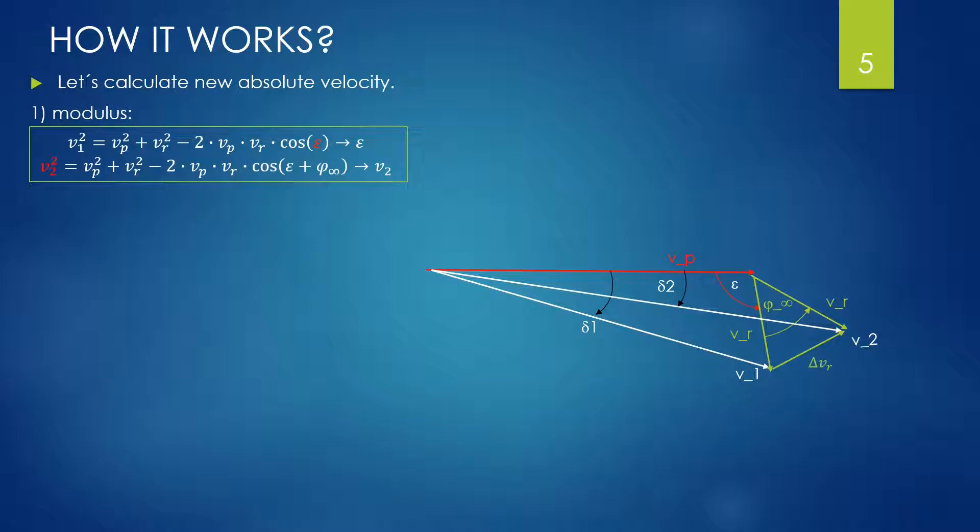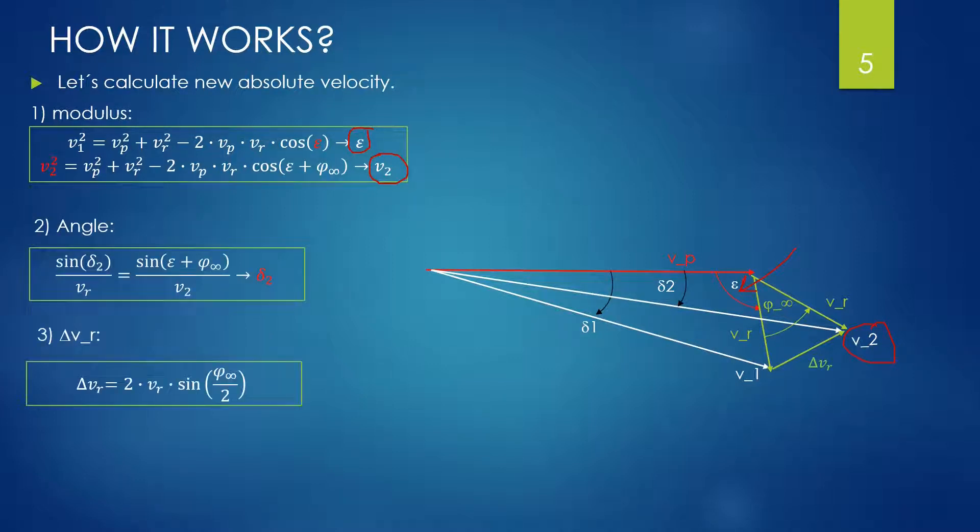By using the cosine theorem between the velocities V1, the absolute entry, Vp, the velocity of the planet, and VR, the relative one, we can calculate the angle epsilon. Now we apply a second time the same theorem between V2, the absolute leaving velocity, also Vp, the planet velocity, and VR, and we find V2 as modulus. About the angle delta 2, between V2 and Vp, we need to utilize the sine theorem. Finally, the delta VR is given by this relation, and this is actually the modulus of the delta V absolute also.